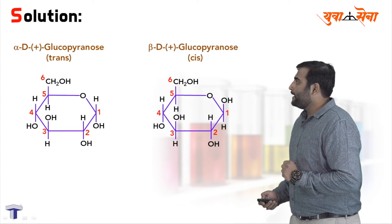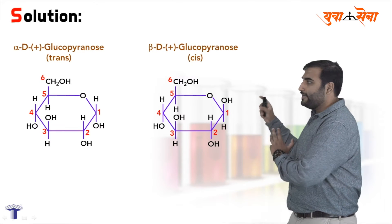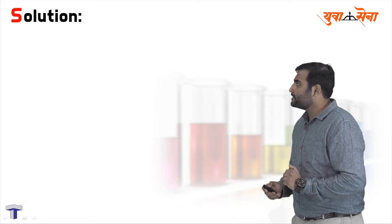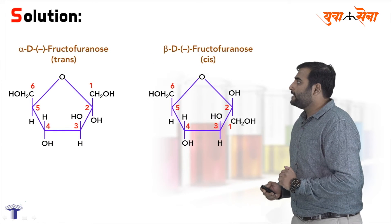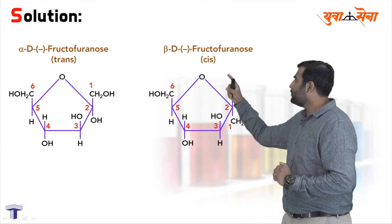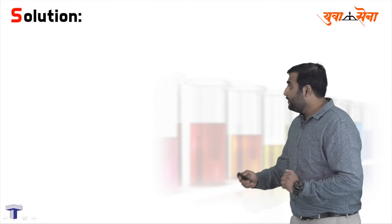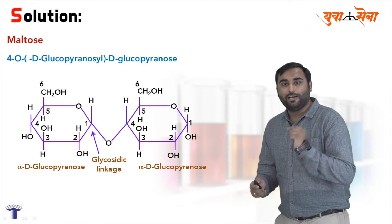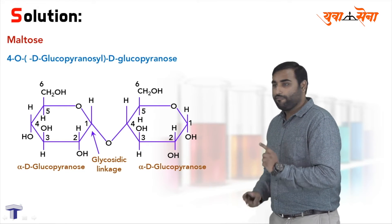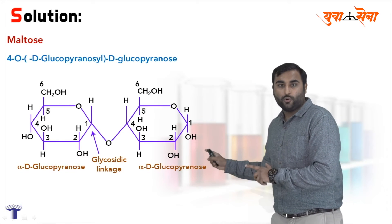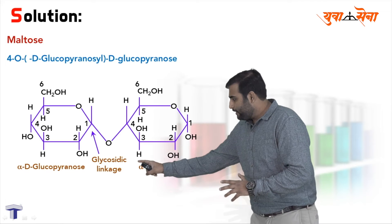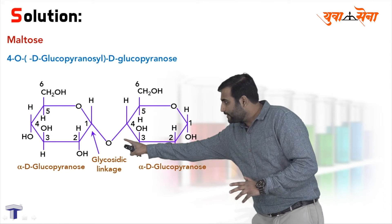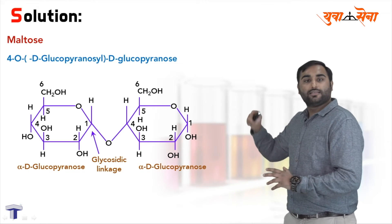Let us see the solution. Pehle ham dekhayenge structure alpha-D aur beta-D glucopyranose ka. Yeh alpha-D aur beta-D glucopyranose ka structure hai. Similarly ham log structure dekhayenge alpha-D-fructofuranose aur beta-D-fructofuranose. Now let us draw the structure of maltose. As you know, maltose is a disaccharide which is made up of both units, that is glucose. Yahan pe bhi alpha-D-glucopyranose hai aur yahan pe bhi alpha-D-glucopyranose hai, aur carbon 1 yeh glucopyranose ka carbon 4 se juda hua hai.